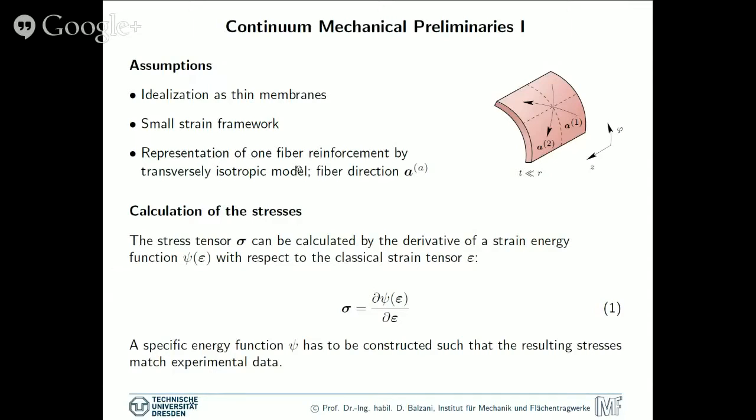And then we focus on a transversely isotropic model, which means that we have a stiff fiber direction A, and perpendicular to this, we have isotropy. And we use this transversely isotropic for the representation of the individual fiber reinforcement. For these materials, we can calculate the stresses basically on the equation that is given here. So sigma would be the stresses in the small strain framework. And these can be calculated by a derivative of this strain energy function psi, which is a function of the strain tensor for small strains epsilon, with respect to these strains epsilon. Of course, this specific strain energy function has to be constructed for the particular material such that characteristic stress strain curves that are measured experimentally can be matched.